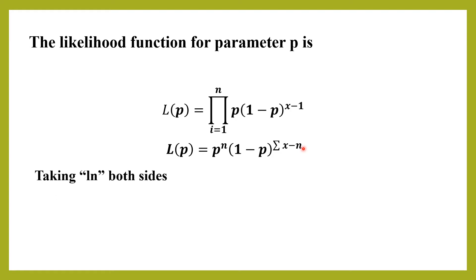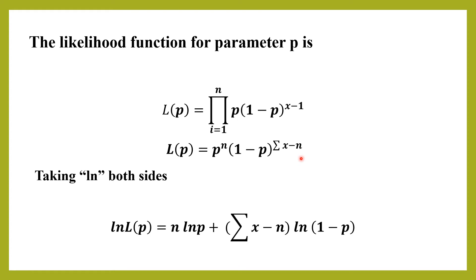To make it more convenient, we take the log of both sides to form the log-likelihood function: ln L(p) = ln[ p^n · (1−p)^(Σx − n) ]. Since these are products with powers, by the laws of logarithms this becomes n·ln(p) + (Σx − n)·ln(1−p).